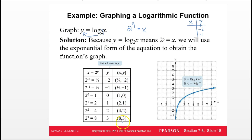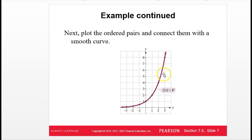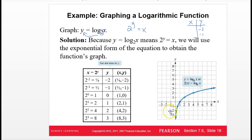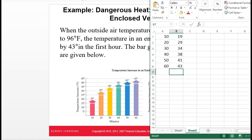Notice that the points are flipped around — the x-coordinates are now the old y-coordinates. That's the way it is with inverse functions: they undo each other. And that's why the graph of the logarithm looks like the inverse of the exponential. The x-coordinates become y-coordinates and vice versa — we're flipping these points around. A logarithm ends up being an exponential function that's been flipped, with x and y coordinates swapped.